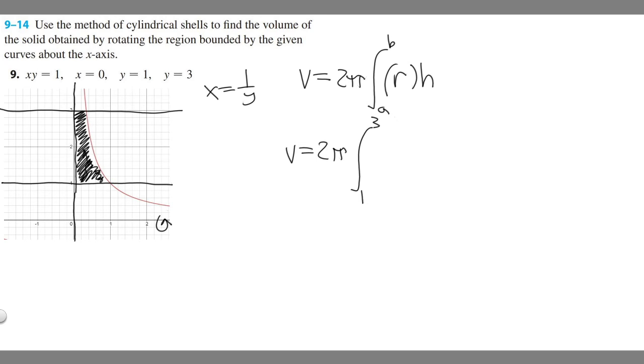Then what we're going to want to do is find the radius. This is something you have to keep in mind. Whenever you rotate around the x-axis, your radius is always going to be y. That's something that you really got to know. If it was another x-line, it'd be a bit different. But just know that if you're rotating around the x-axis, it's always going to be y.